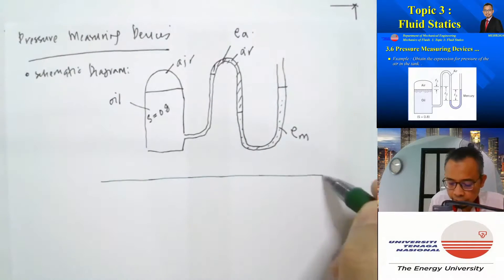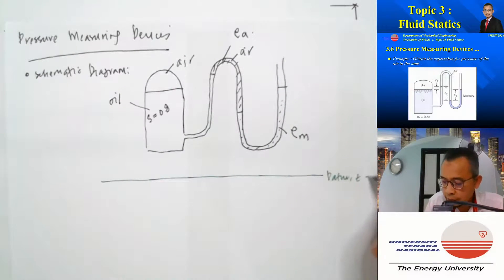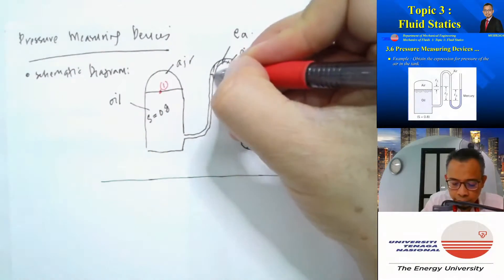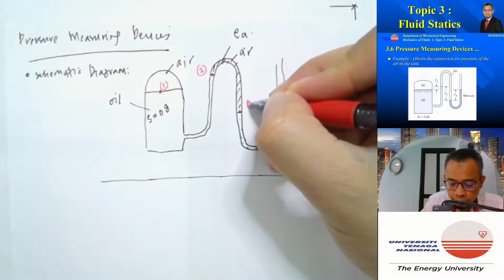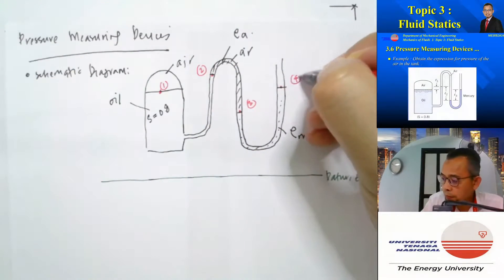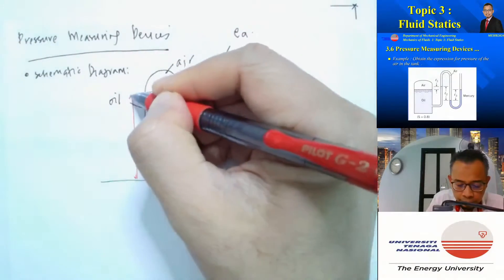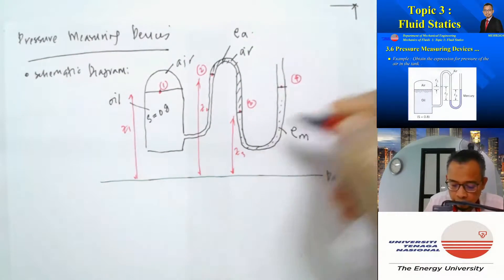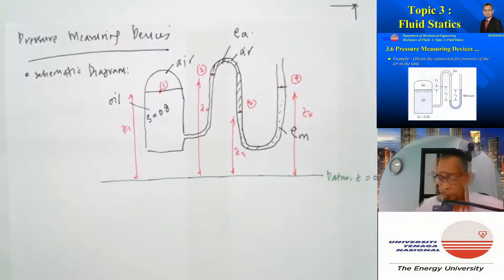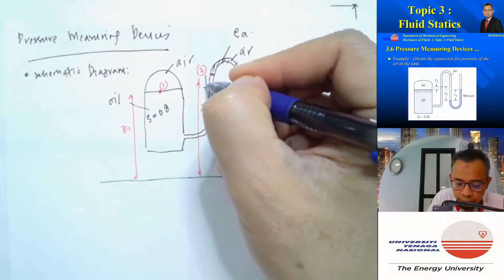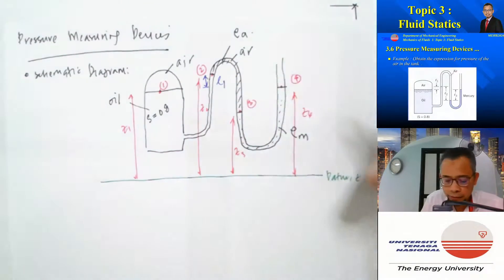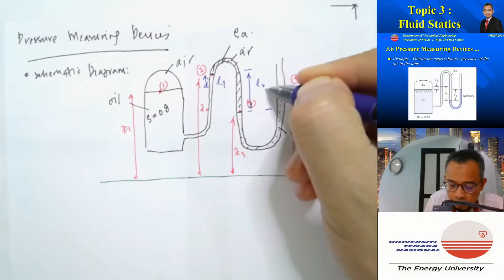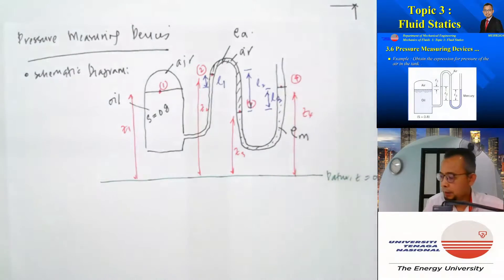Let's draw our datum where z equals 0. I'm going to call the key points 0.1, 0.2, 0.3, and 0.4, giving heights z1, z2, z3, and z4. The height differences are labeled l1, l2, and l3 respectively.